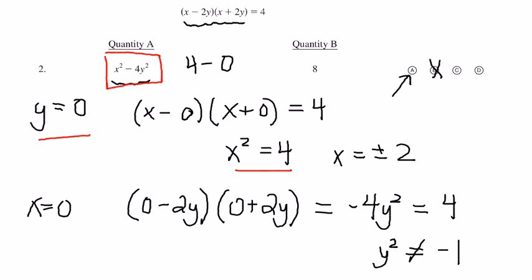We know for sure that A is wrong, and we know for sure that C is wrong. Because it's certainly true that they're not equal, and it's certainly true that the quantity in column A is not the bigger one.